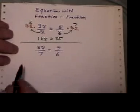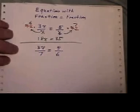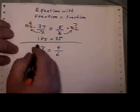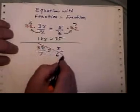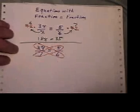It only works if you have a fraction equal to a fraction, nothing added or subtracted to either of them. What we're going to do is cross multiply. These two guys multiplied have to equal these two guys multiplied.